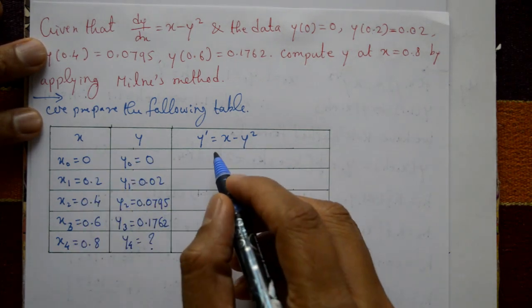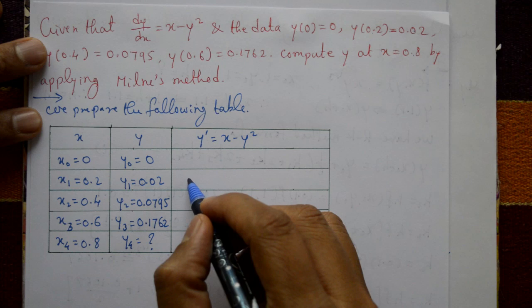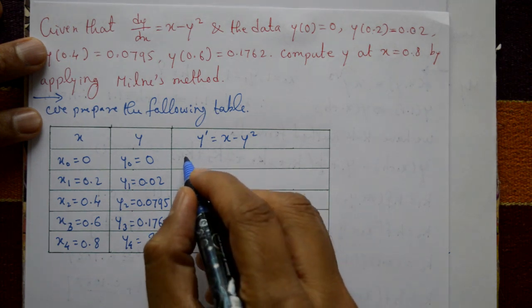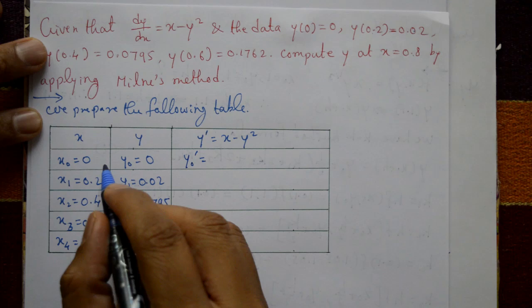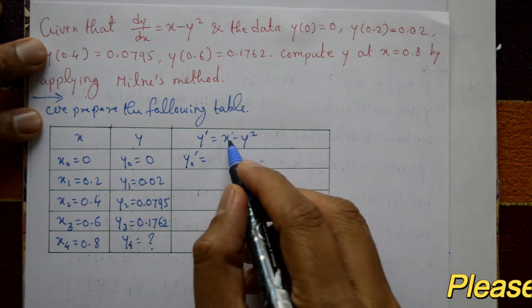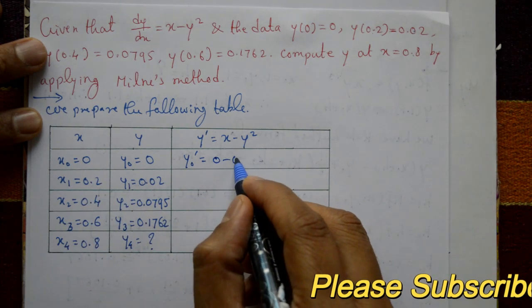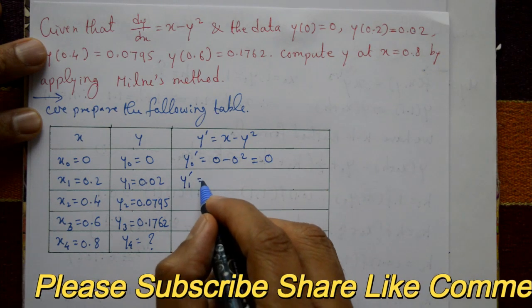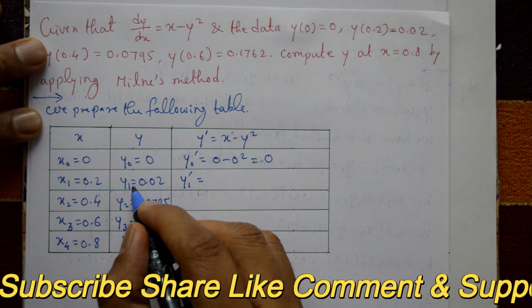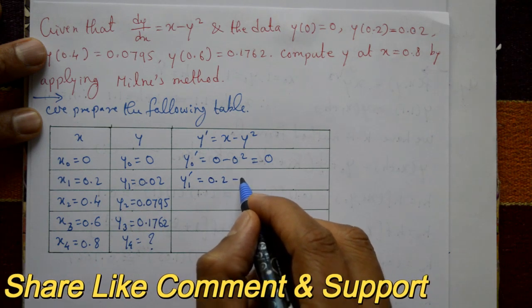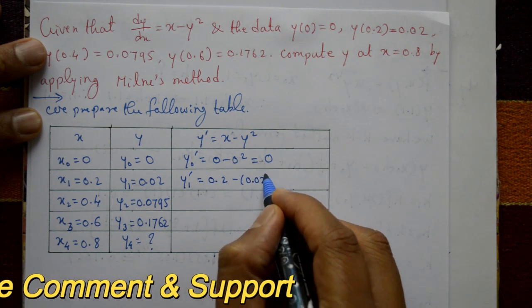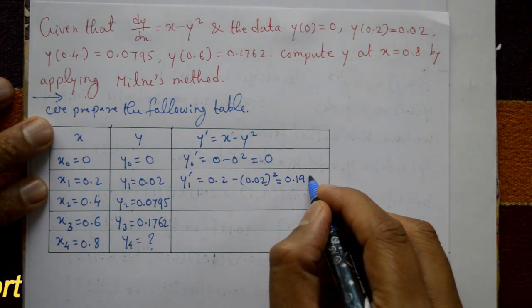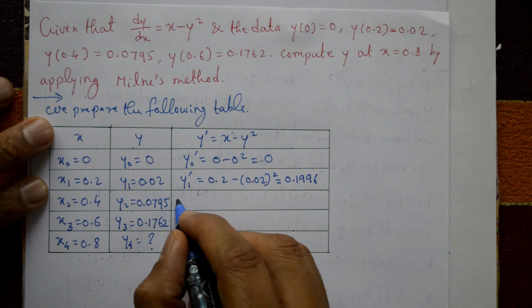In the table we also find y0', y1', y2', and y3'. Now y0' = x0 - y0² = 0 - 0² = 0. Next, y1' = x1 - y1² = 0.2 - (0.02)² = 0.1996.